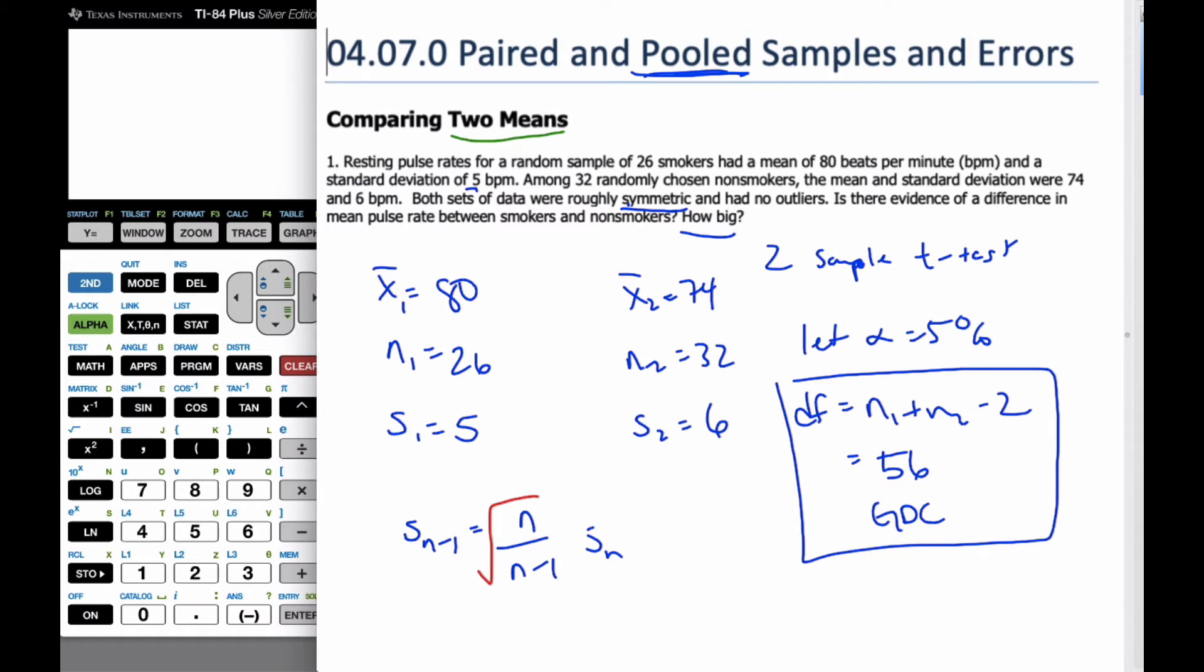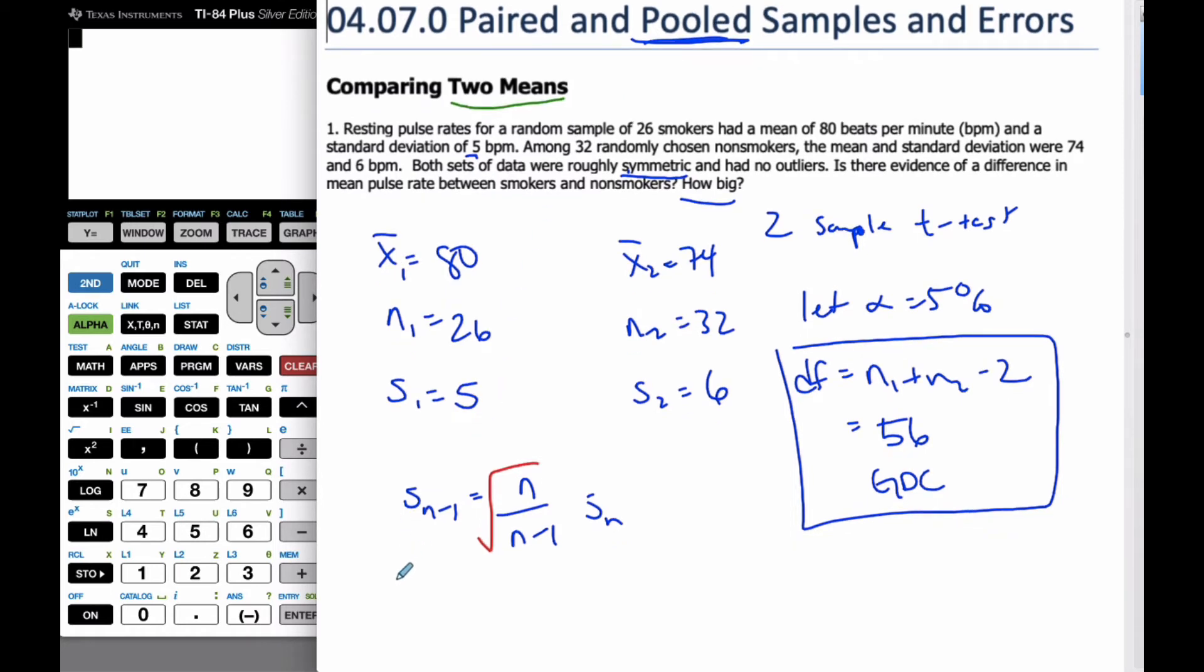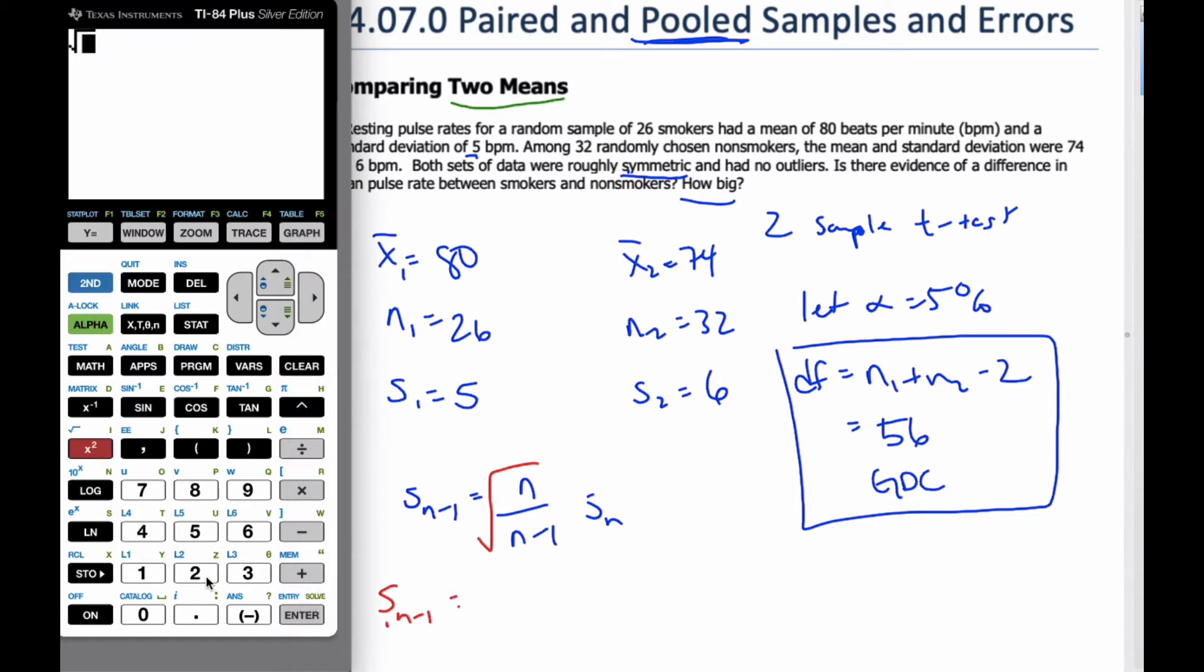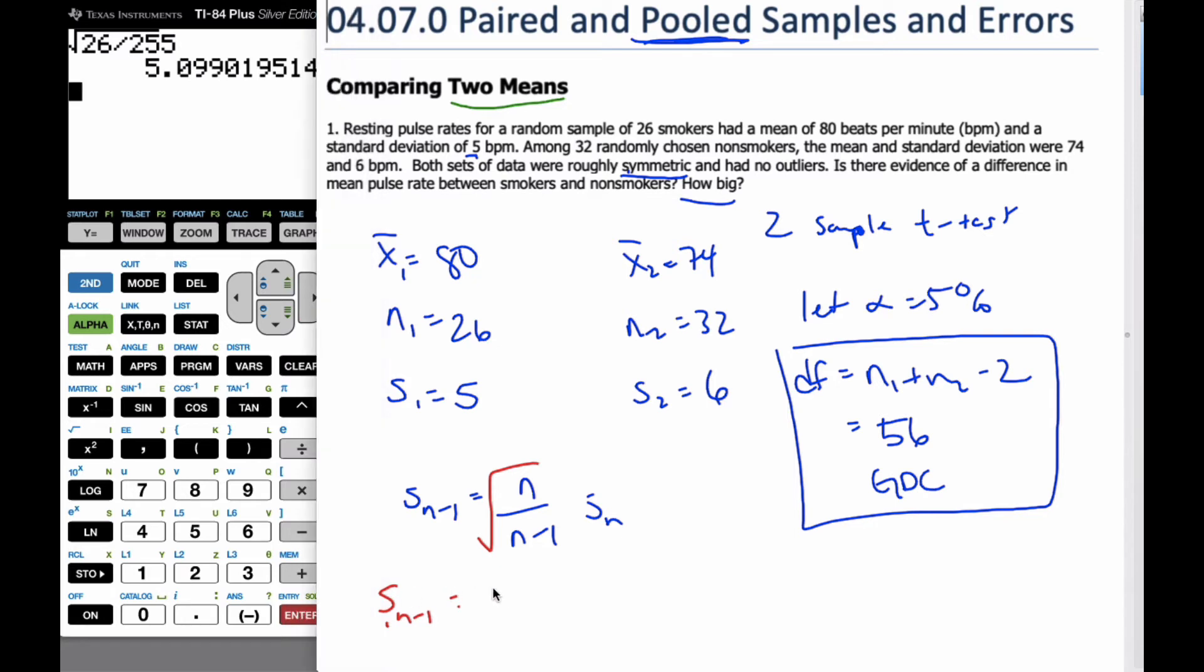So I can just do this particular calculation. My standard deviation number 1 is going to be, if I go second, 26 divided by 25 times 5 is 5.0990195.